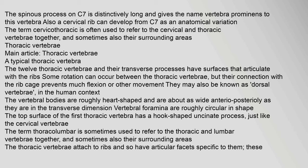The spinous process on C7 is distinctively long and gives the name vertebra prominens to this vertebra. A cervical rib can develop from C7 as an anatomical variation. The term cervicothoracic is often used to refer to the cervical and thoracic vertebrae together, and sometimes also their surrounding areas.